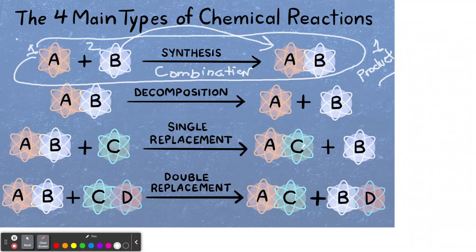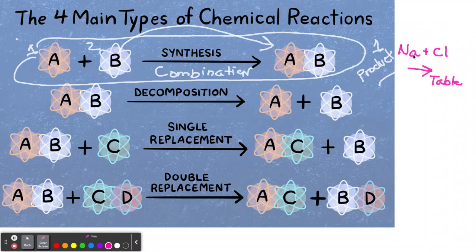Two or more reactants are going to make one product. For example, if we take sodium plus chlorine as our reactants, they yield one product — sodium chloride, which is table salt. So sodium plus chlorine gives us sodium chloride. Pretty simple.